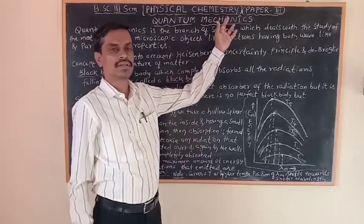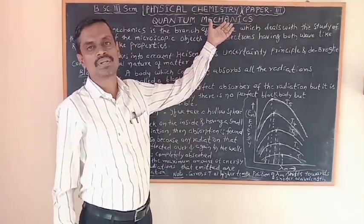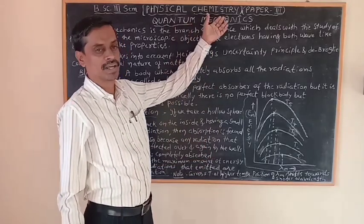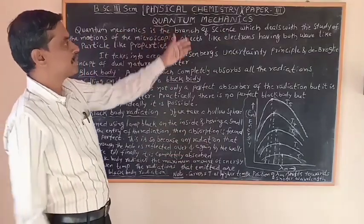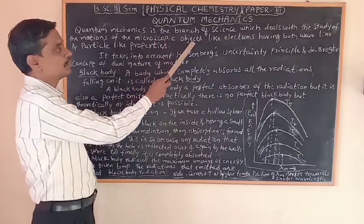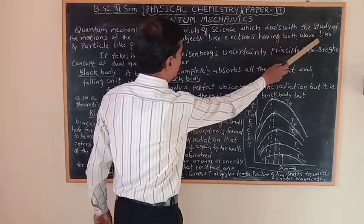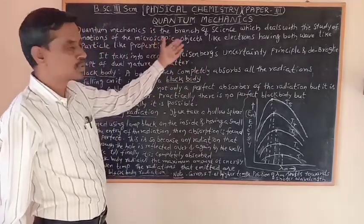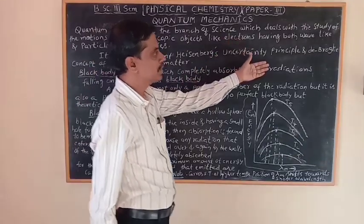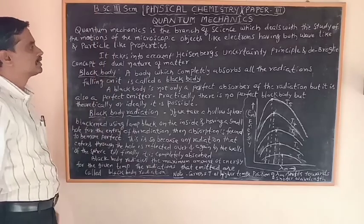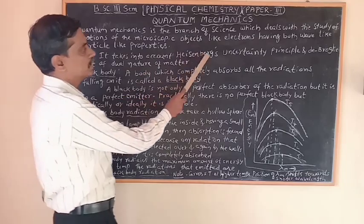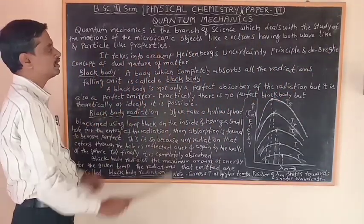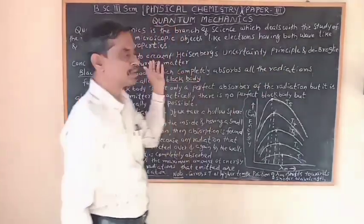We might have studied classical mechanics in previous classes — the branch of science which deals with the study of macroscopic objects like a cricket ball or football and their motion. But now we are studying quantum mechanics. Quantum mechanics is the branch of science which deals with the study of motions of microscopic objects like electrons, having both wave-like and particle-like properties. Quantum mechanics takes into account two important principles: Heisenberg's uncertainty principle and de Broglie's concept of the dual nature of matter — matter behaves as both a wave and a particle.